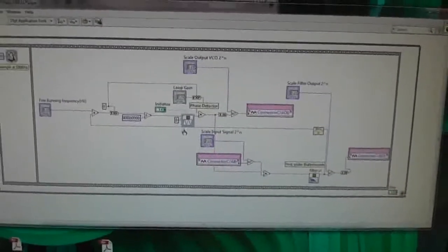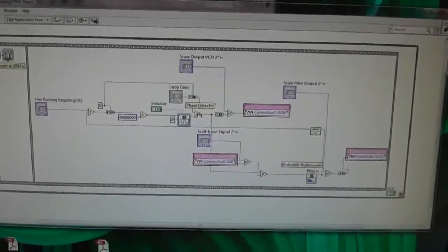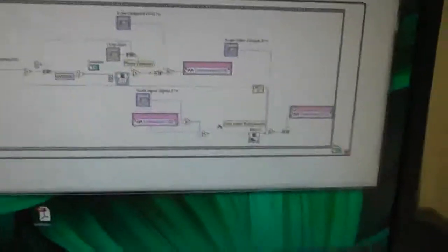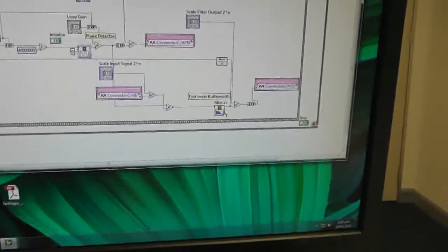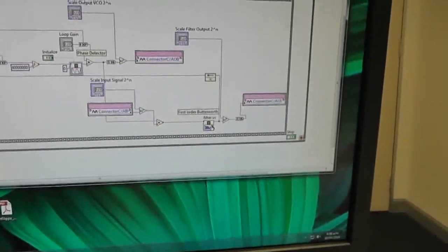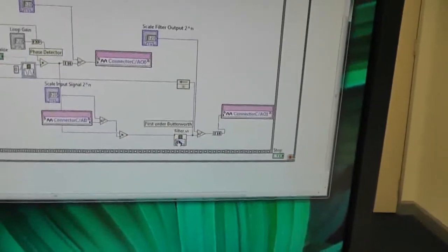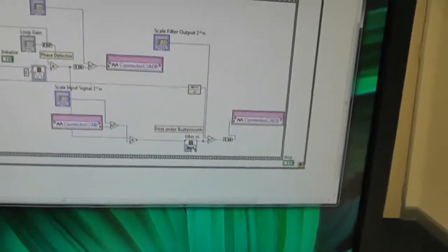Then here, VCO, this is the phase detector, it's just simply a multiplier, nothing else. I've got a filter down here which again comes from the library, which is a Butterworth filter, although first order doesn't really mean much, although it's got a flat passband.